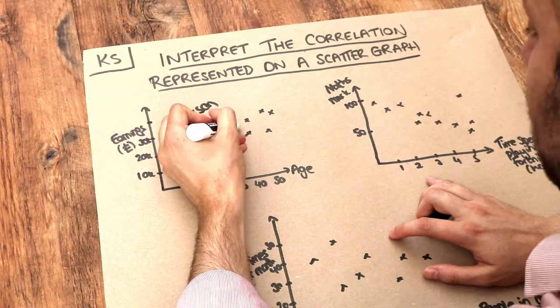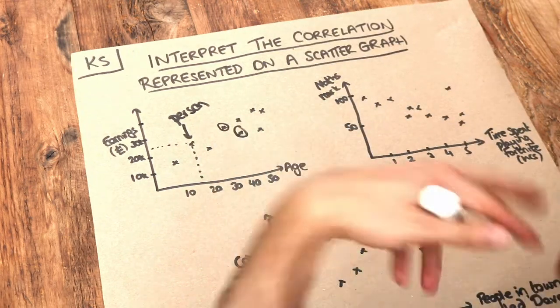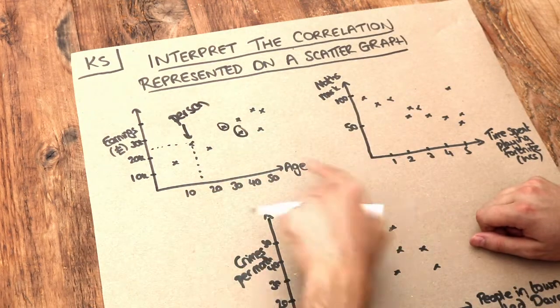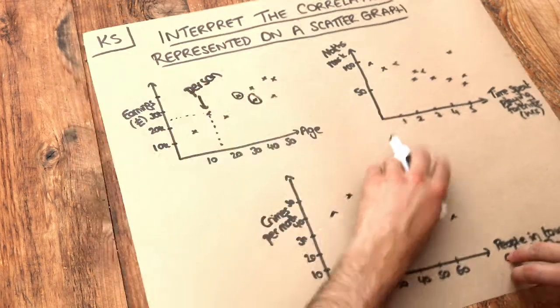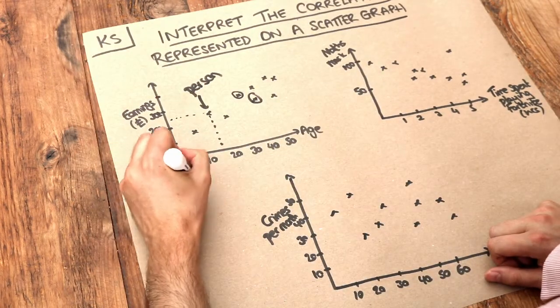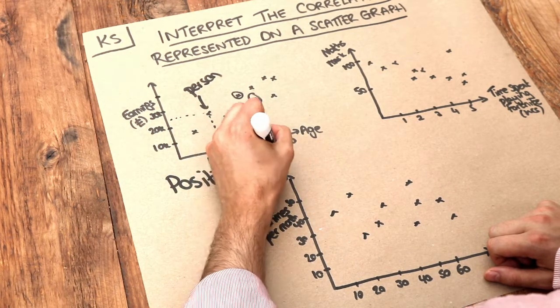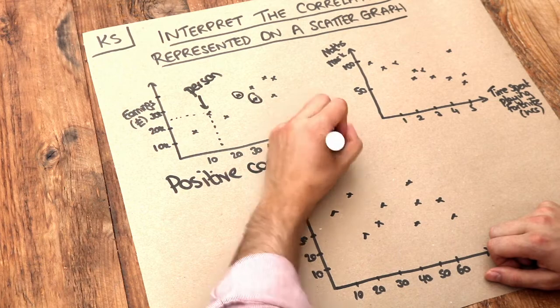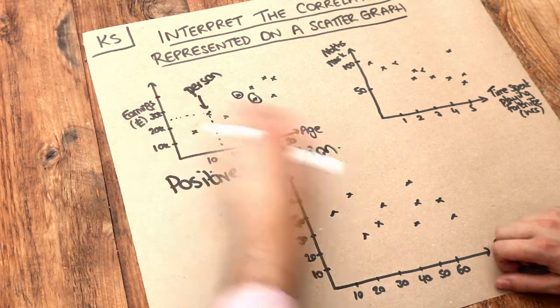Now that's not always true. Take these points for example: this person is older than that person but earns less. But overall there's a trend that the older you are, the more you earn, and we call that a positive correlation. So if you're asked to describe the correlation, you would say there's a positive correlation because as one thing increases—the age—the other thing also tends to increase.